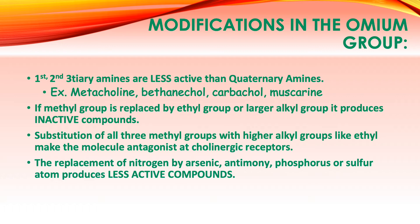For this section, look for the structures of methacholine, bethanechol, carbachol, and muscarine and identify the quaternary amine portion each possesses. If the methyl group in the onium part is replaced by an ethyl or larger alkyl group, it inactivates the compound — unfavorable for cholinomimetic action. Substitution of all three methyl groups with higher alkyl groups like ethyl makes the molecule an antagonist of the cholinergic receptor, which is unfavorable as a cholinomimetic.